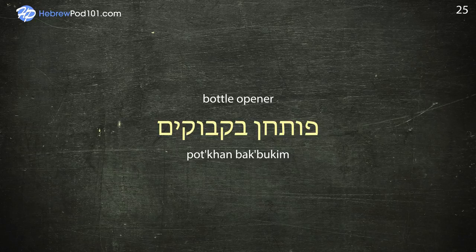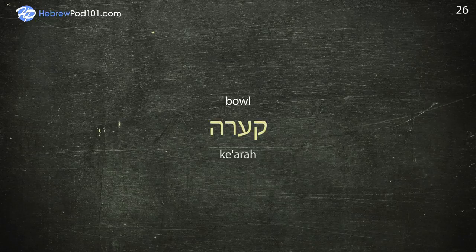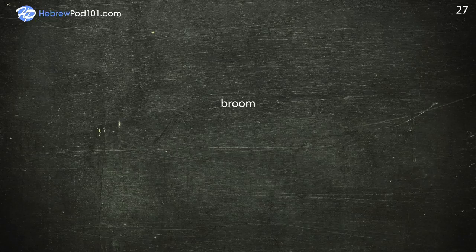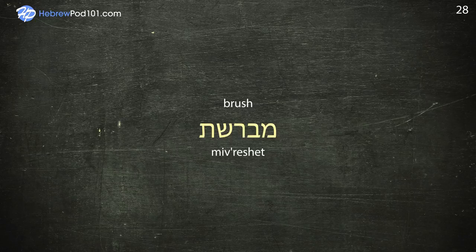Bowl — Kaira. Broom — Matate. Brush — Meveresh. Bucket — Glee.